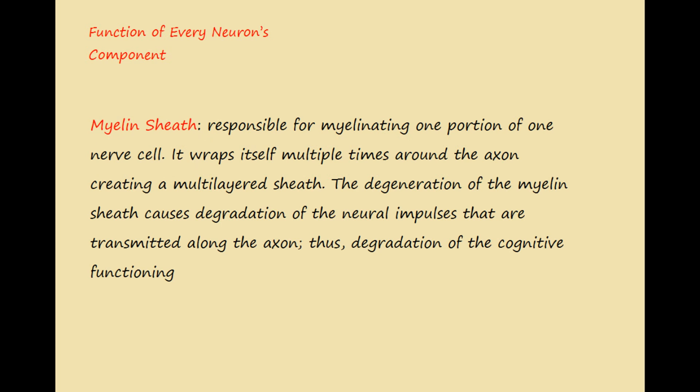Then we have the myelin sheath, which is responsible for myelinating one nerve cell. It wraps itself multiple times around the axon, creating a multi-layered sheath — this is the wrapping process. The degeneration of the myelin sheath causes degradation of the neural impulses transmitted along the axon, and thus degradation of cognitive functioning.